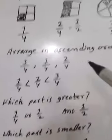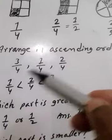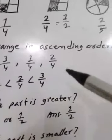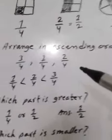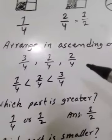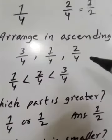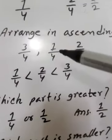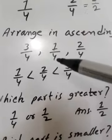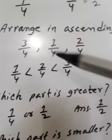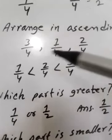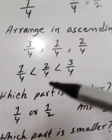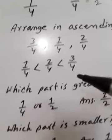Arrange in ascending order: 3 by 4, 1 by 4, 2 by 4. Ascending order means smallest one first. Here, 1 by 4 is the smallest and 3 by 4 is the highest. So: 1 by 4 is less than 2 by 4, less than 3 by 4.